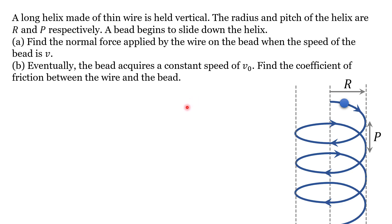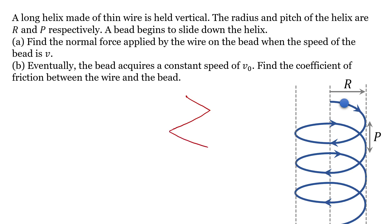Coming to the solution part, if you see this whole motion in the front view — if you have a vertical spring just in front of you — you will not see the path like this, but you will see a path something like this. You must have seen this kind of representation of the spring in some textbooks. This is going to be the front view and the top view will be purely circular.